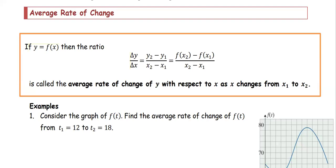In this section, we are going to talk about the average rate of change. If y equals f, then the ratio delta y over delta x — where delta y is the difference of two y values and delta x is the difference of the two x values — can be written as y2 minus y1 over x2 minus x1, where y2 is f at x2 and y1 is f at x1.